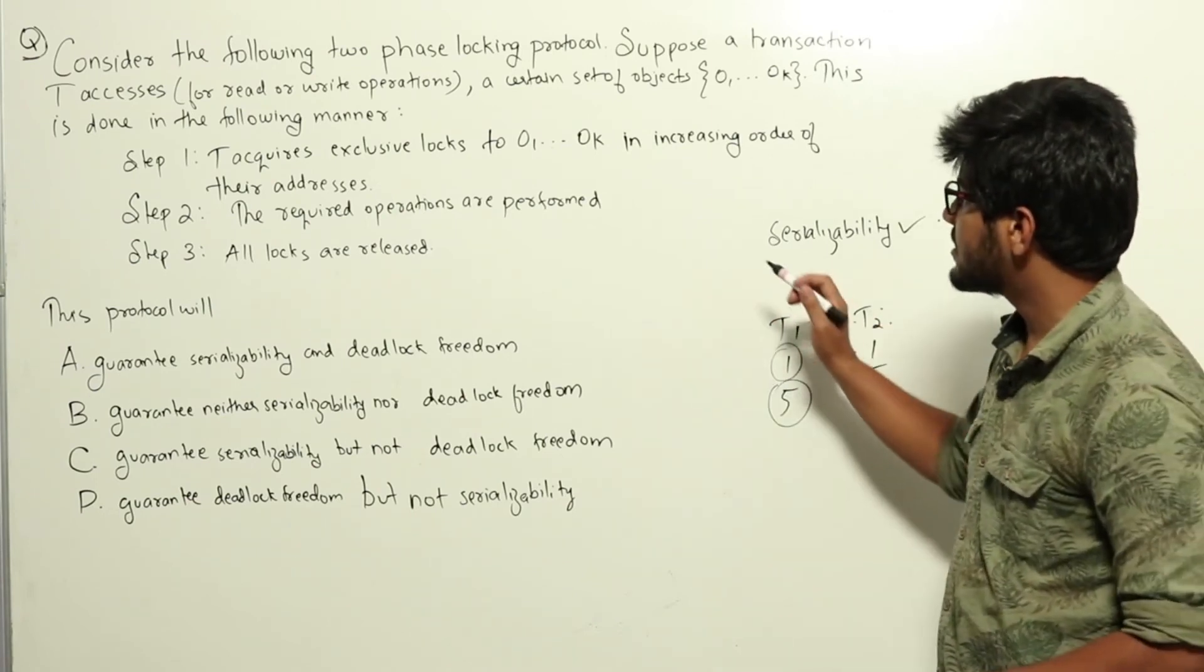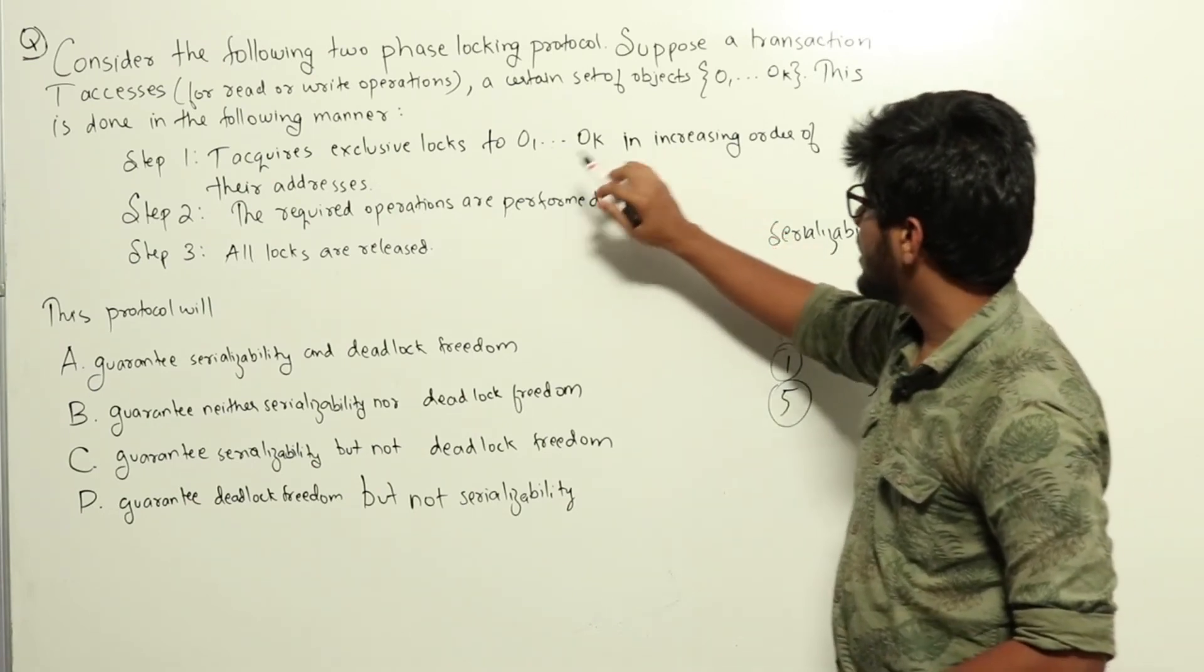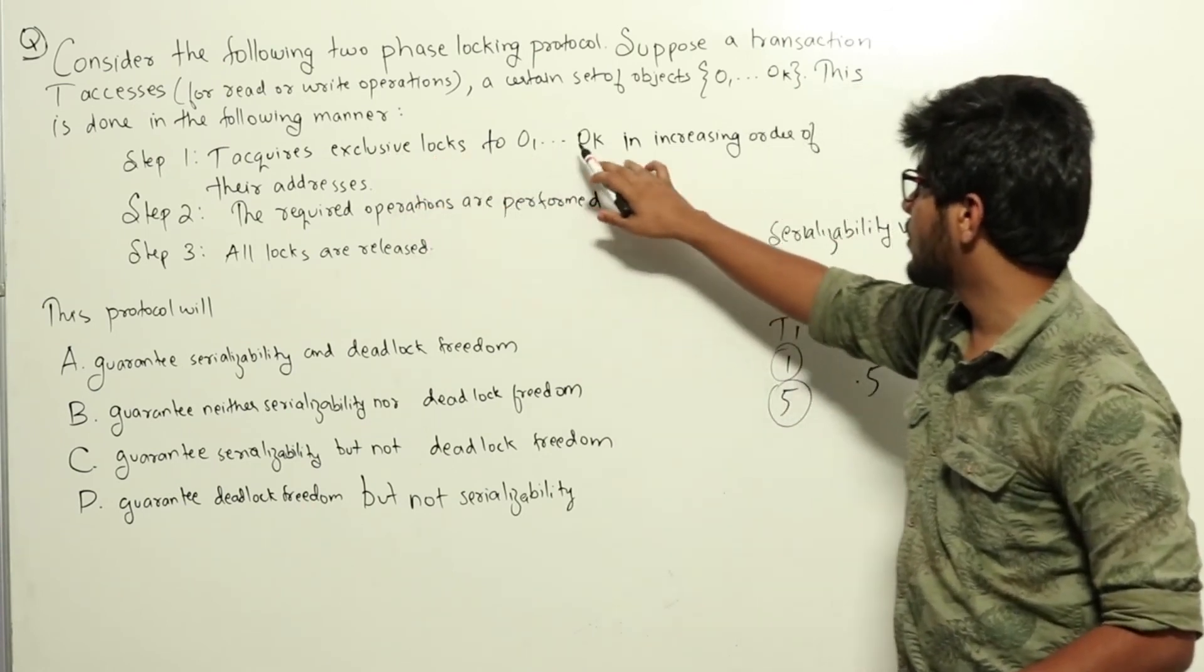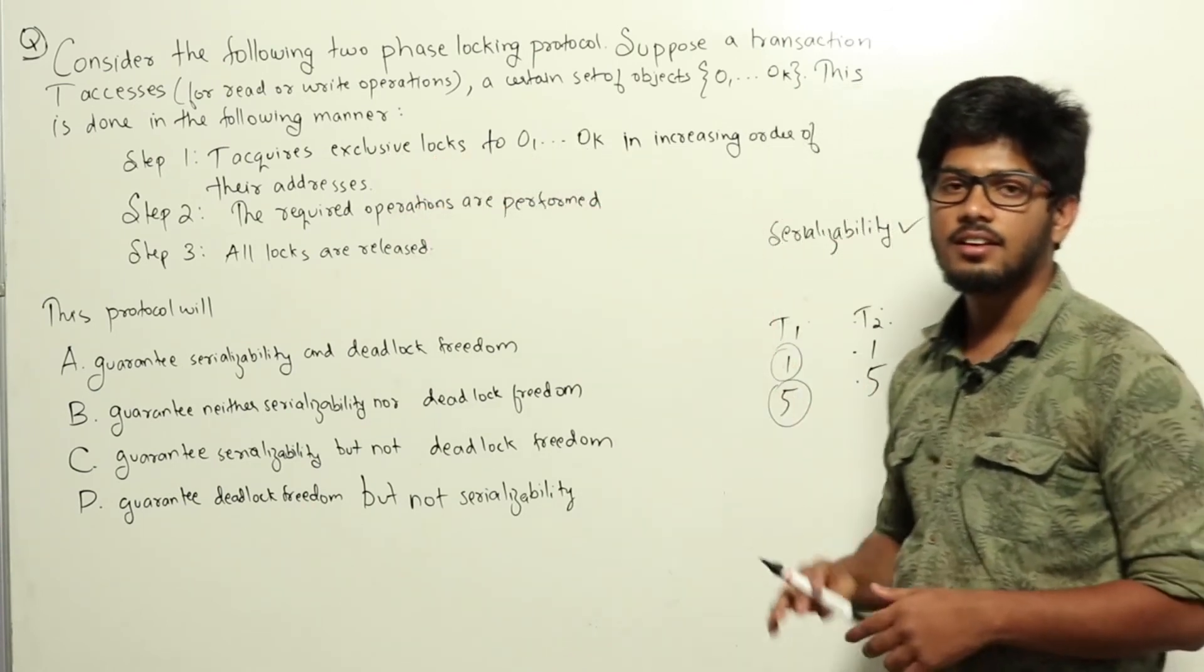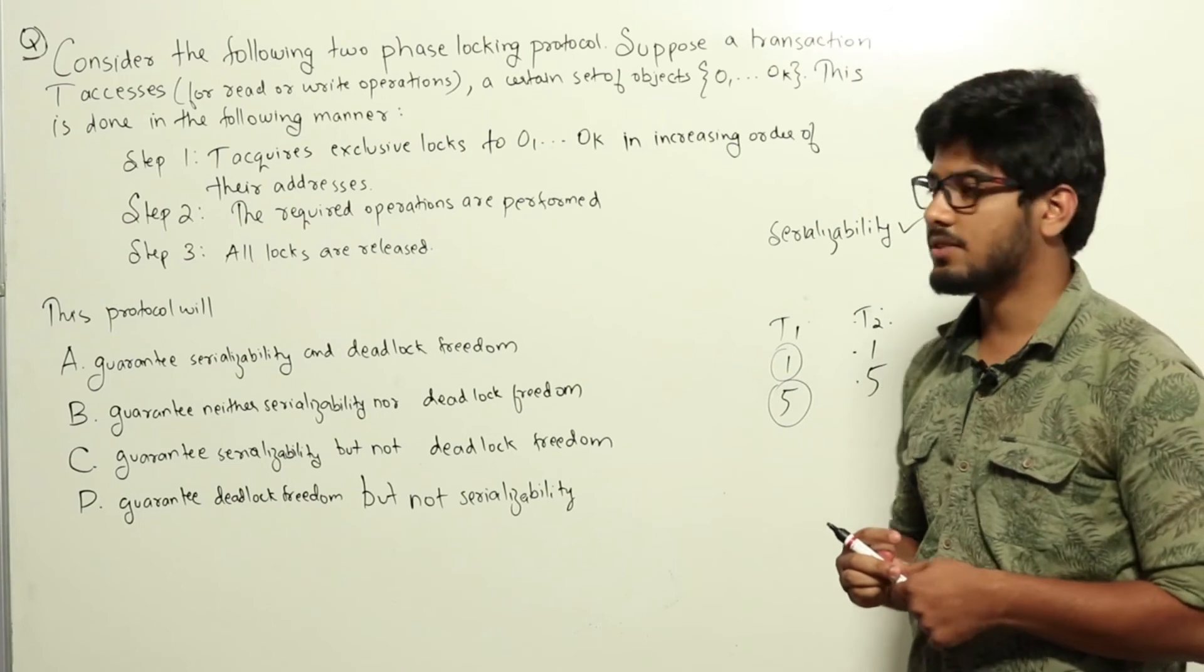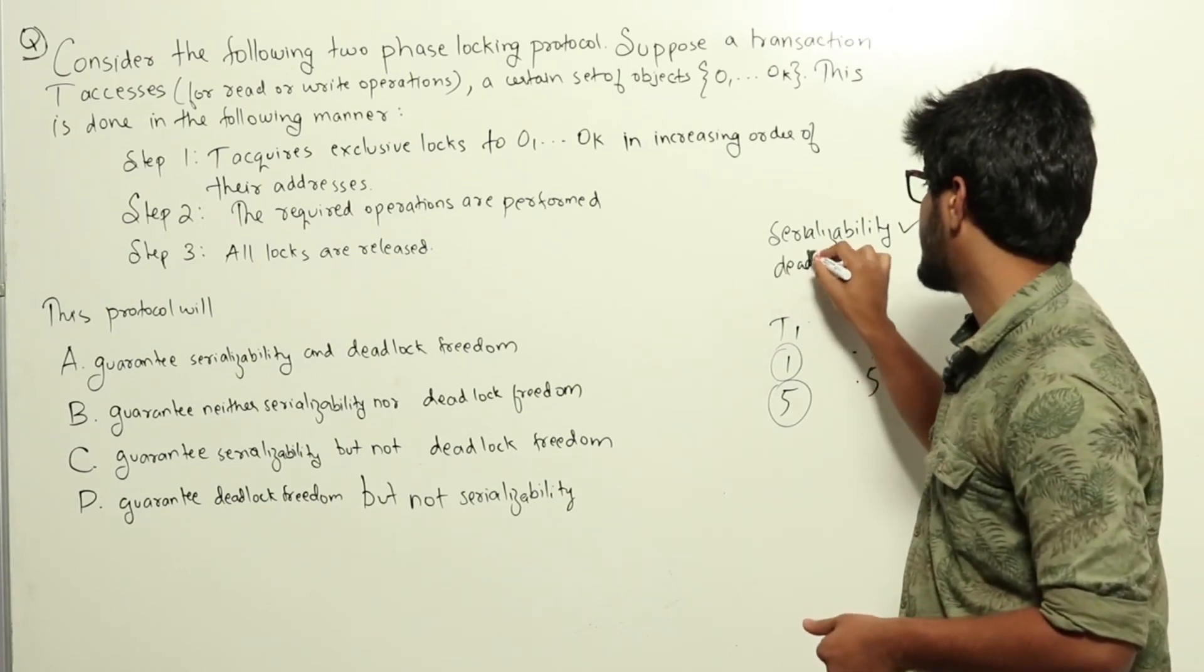So if all transactions are only asking locks in the increasing order of the addresses of the objects, then circular wait condition will never be satisfied. So deadlock freedom is also guaranteed.